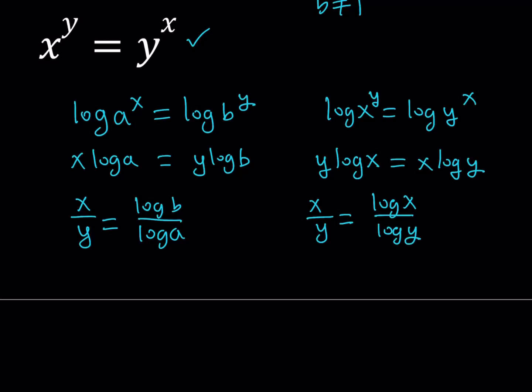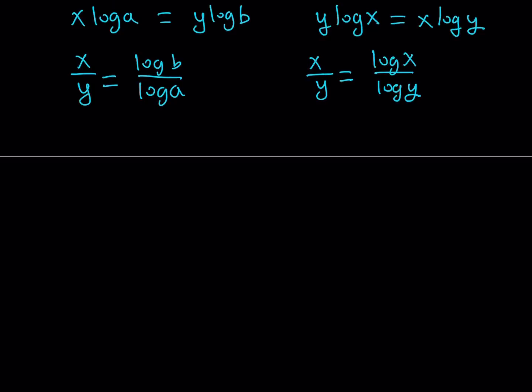So since x over y can be written in two ways, we can set them equal and then see what we can do from there. So I can write it as log b over log a is equal to log x over log y since they're both equal to x over y. For here, I'd like to do cross multiplication.